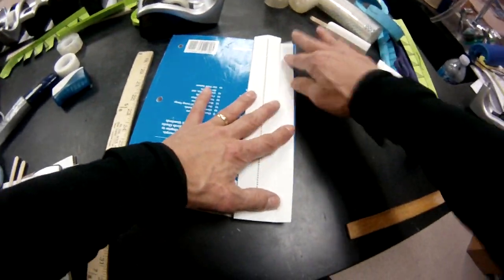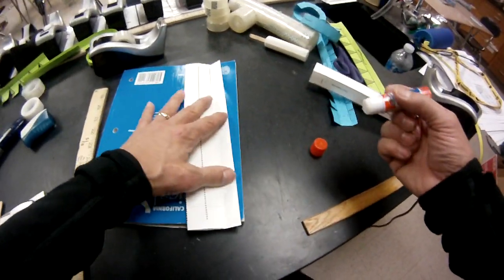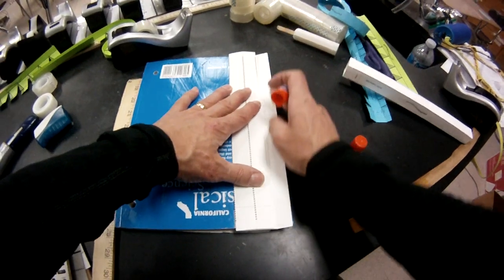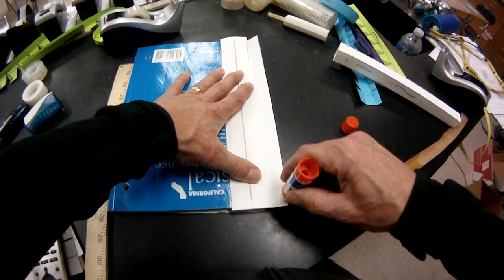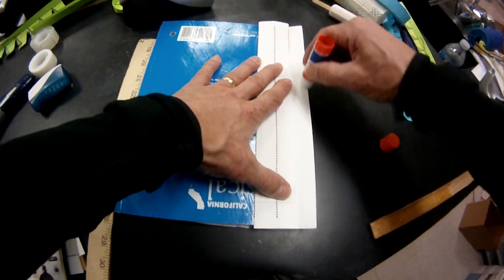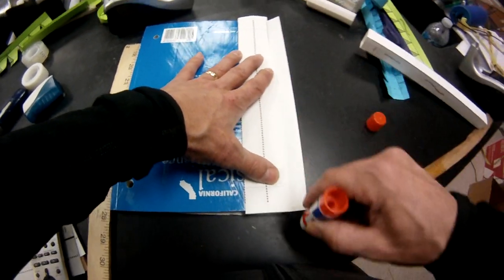Okay, so the way I make mine, it's super sturdy. I throw a little glue stick on there. Bring this right to the edge. Right to the edge, back and forth. Boom.